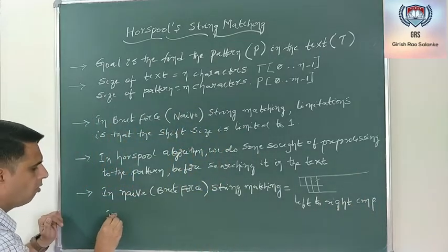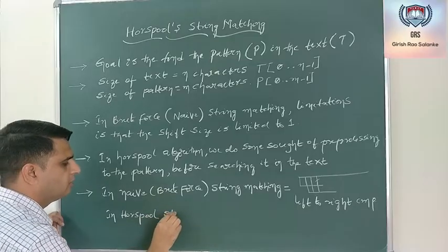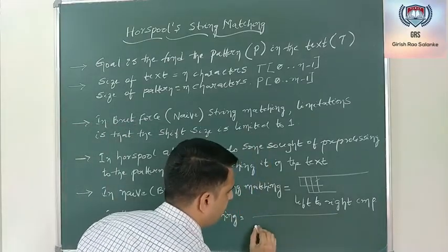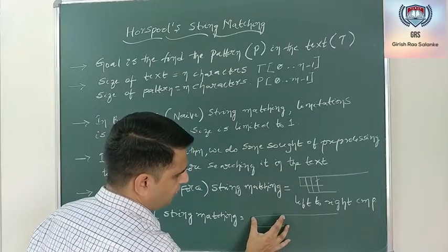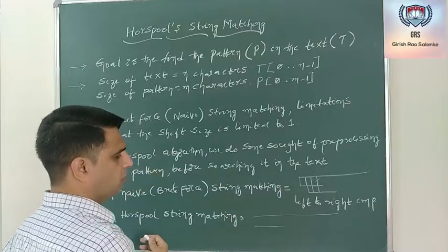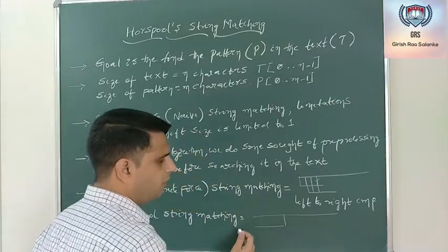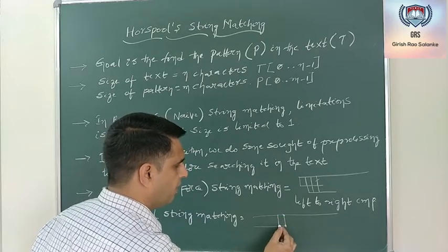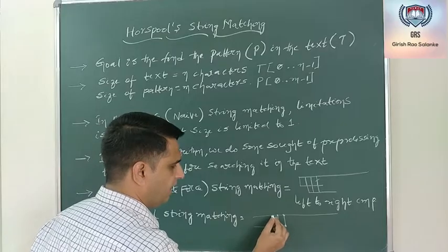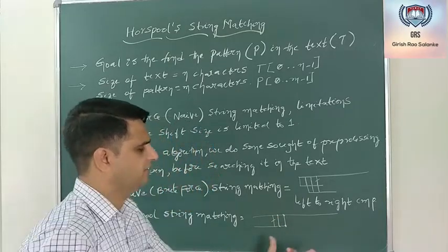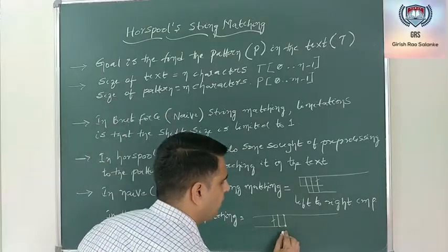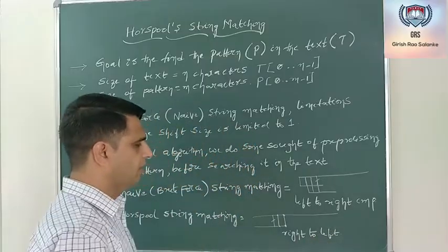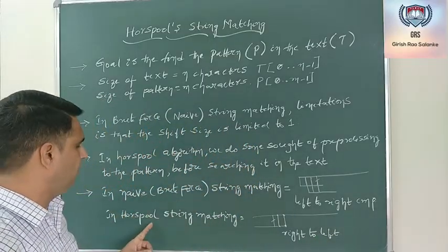In Horspool string matching, after aligning the m characters of the pattern with the first m characters of the text, comparison is always done from right to left. I compare the last character of the pattern with the corresponding character in the text first. If they match, I compare the last-but-one, and so on. This right-to-left comparison is another key difference from NAV.